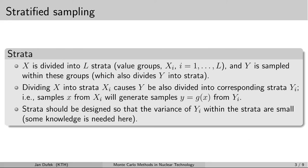The division of the range for the input random variable x can be done into many groups — we used two groups in our example, but there can be many. Let's assume we have L groups. We can number these groups according to the group index, so x_i denotes the i-th group.